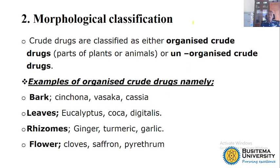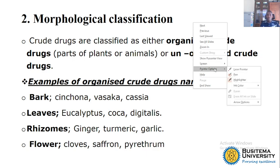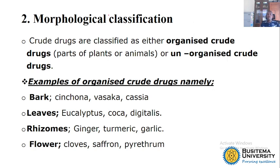The second way to classify drugs is morphological classification. With morphological classification, you classify drugs as either organized or unorganized. Organized means you are picking that particular drug from a particular part of a plant — for example roots, stem, bark. Unorganized means you are picking the drug not from a specific part, but for example the sap, latex, or juice.